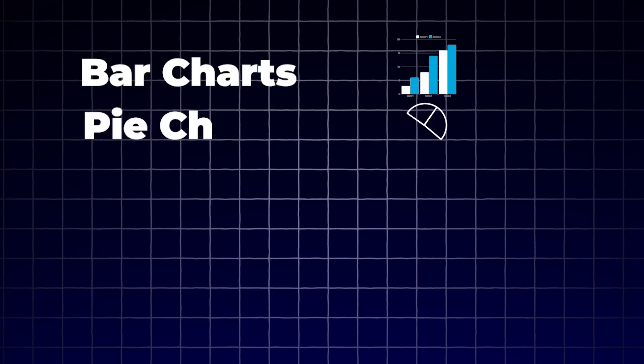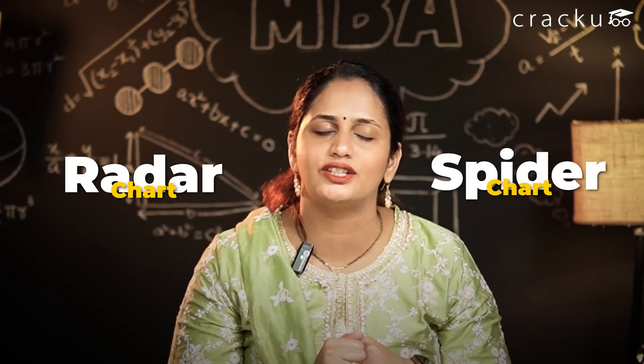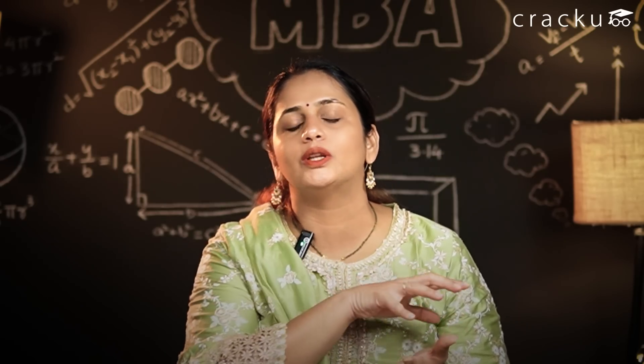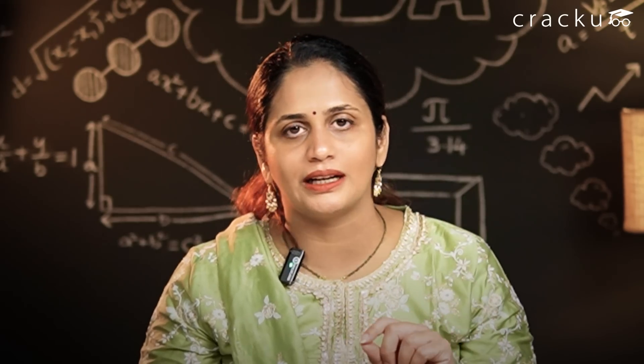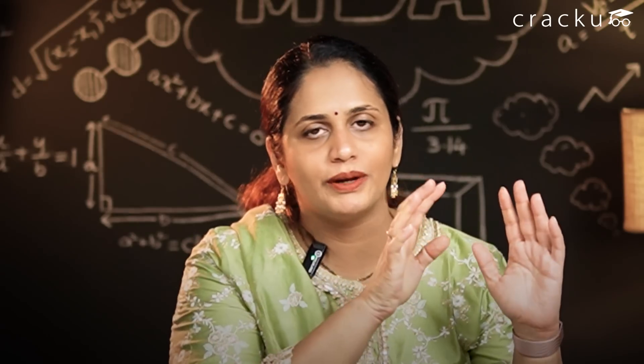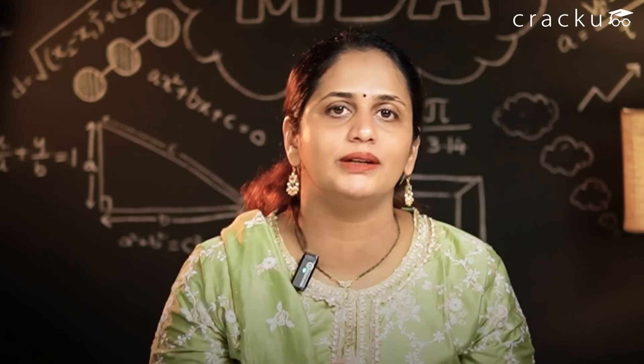Convert the chart to a table and it becomes much simpler to solve the DILR set. Chart-based sets can be based on bar charts, pie charts, line charts, area charts, bubble charts, and the radar chart or spider chart — which was common in CAT for a few years but hasn't been asked recently. You should be comfortable with all different types of charts, able to read them and convert them to a table. Once that job is done, it becomes extremely simple to solve the set.